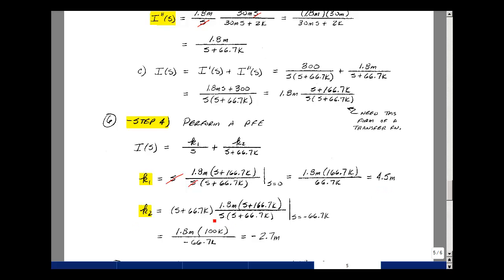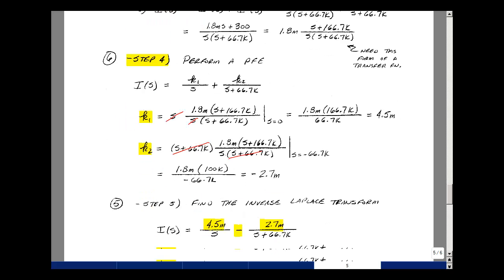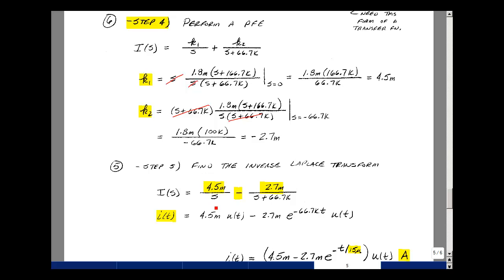k2 is to take our transfer function, multiply it by (S + 66.7k), and then evaluate when S is equal to minus 66.7k. This will cancel with this. So 1.8 mA times (minus 66.7k + 166.7k) is 100k, and then denominator just the minus 66.7k. That gives me a value of minus 2.7 mA. Now I can express I(s) in my step five as 4.5 mA over S minus 2.7 mA over (S + 66.7k). Taking the inverse Laplace transform, then I get 4.5 mA times u(t), then minus 2.7 mA, e^(-66.7k * t) times u(t).